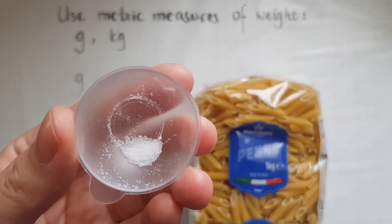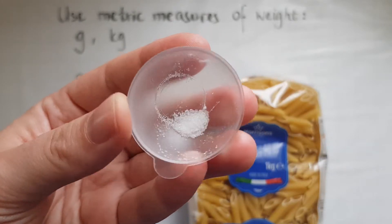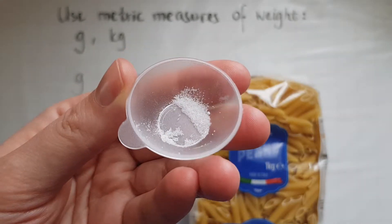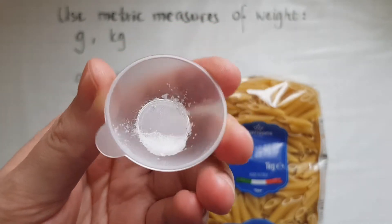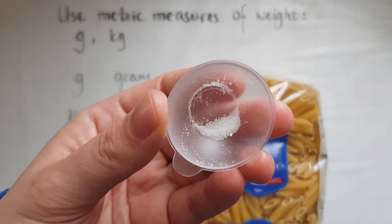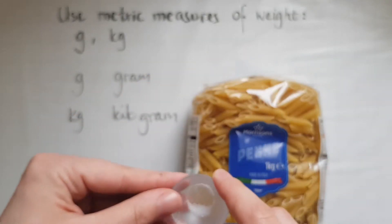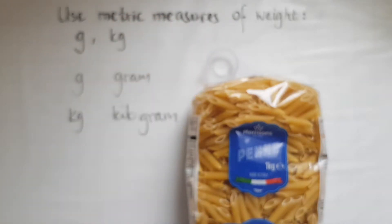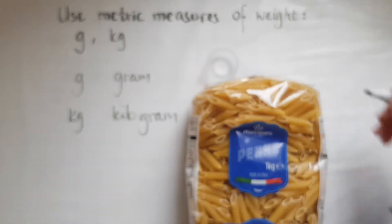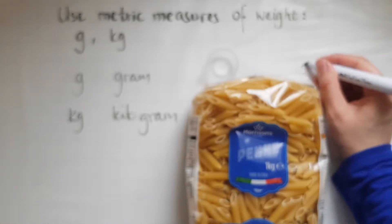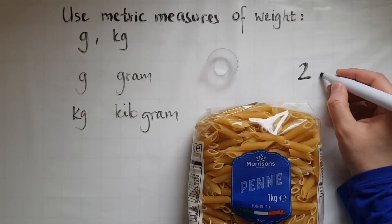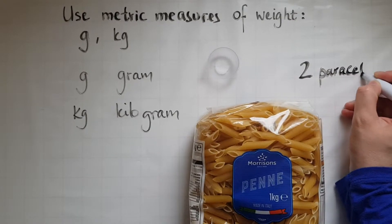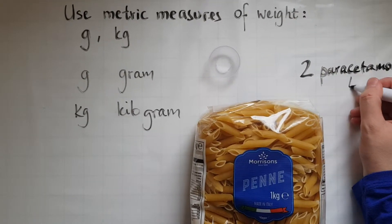A paracetamol tablet is 500 milligrams, and two paracetamol tablets make one gram. So it's about two paracetamol tablets — I'll write that down to help us remember: two paracetamol tablets weigh one gram.